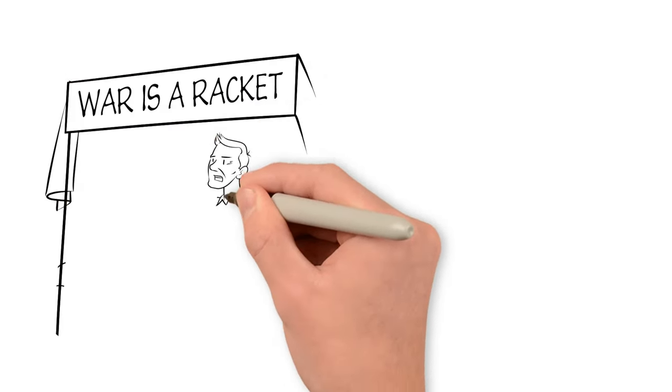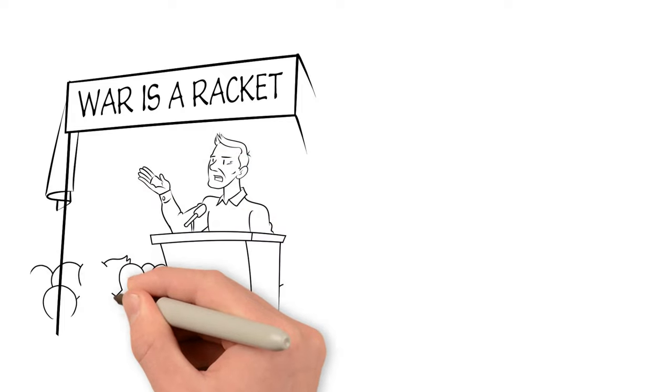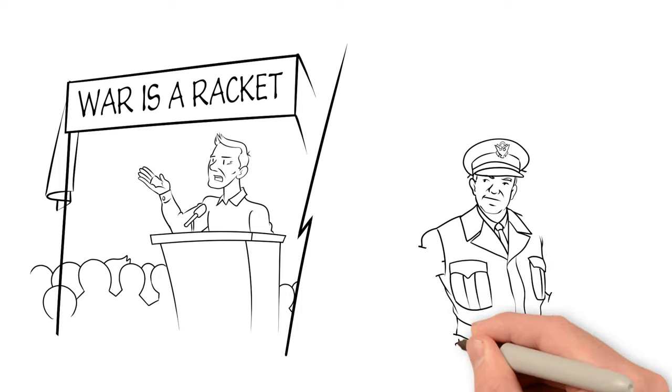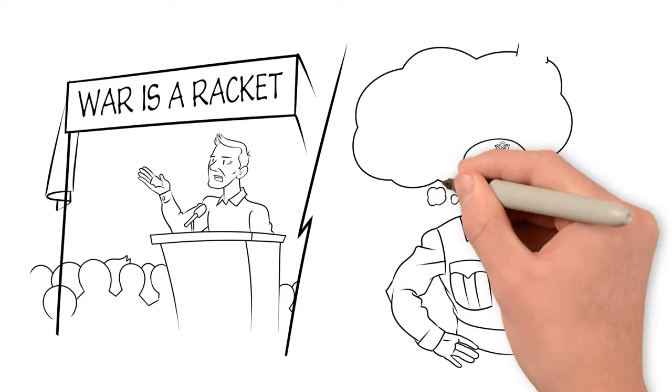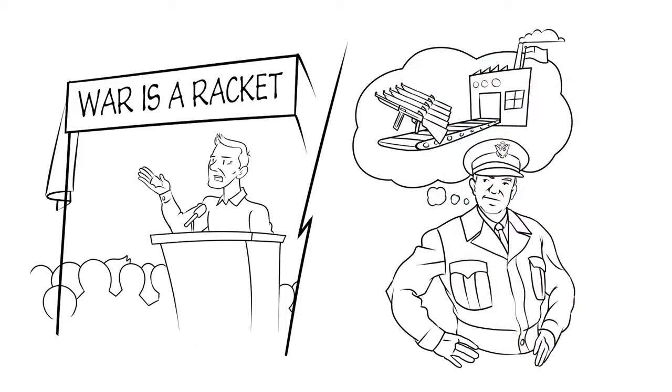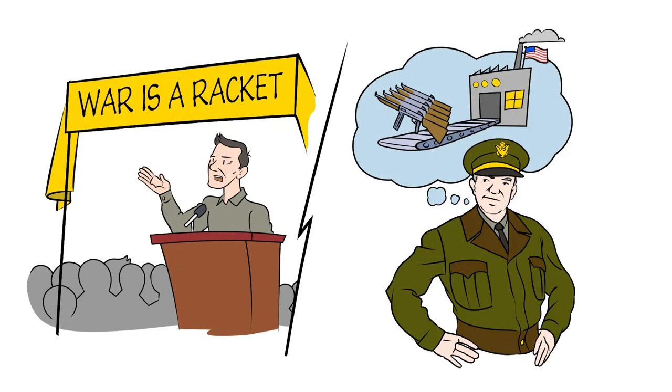In the 1930s, Smedley Butler explained how the military subsidized private companies, but it wasn't until the Second World War that Eisenhower noted America developed a permanent armaments industry of vast proportions. So how did this come about?